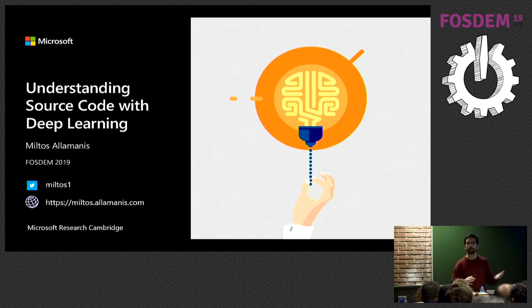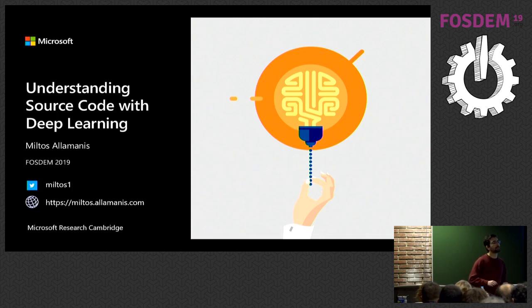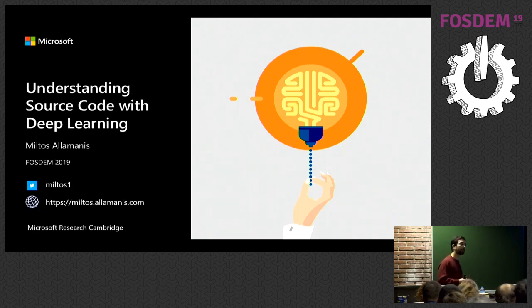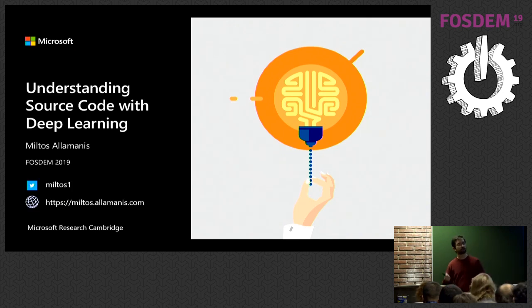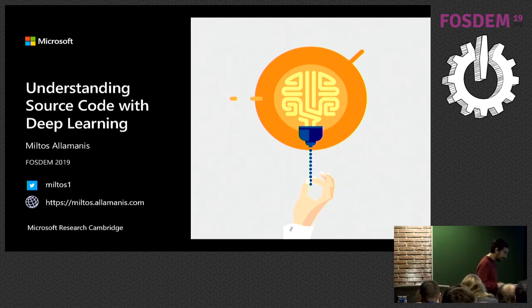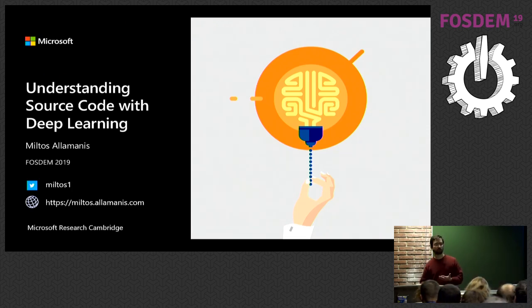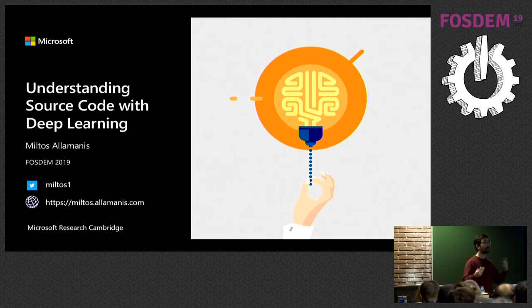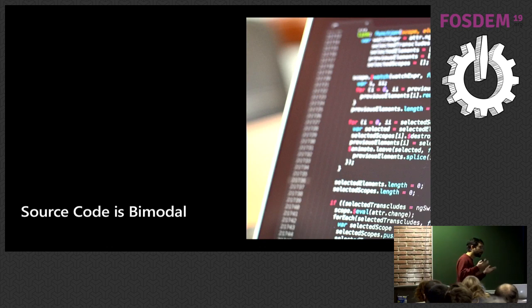I've been working in research, machine learning, and software engineering and programming language research in this area for the last maybe seven years. What I wanted to discuss today is give you a brief overview of some of the research things coming up — not necessarily things you'll go home and use right away, but an overview of where we see things going. The first question is: why can we even use machine learning for source code?